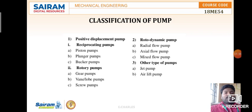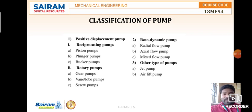Coming to rotary pumps — these do not have a piston arrangement. Instead, they have a rotor which rotates, so there is no to-and-fro motion, only rotary motion. That is why these are called rotary pumps. Examples of rotary pumps include gear pumps, vane or lobe pumps, and screw pumps.